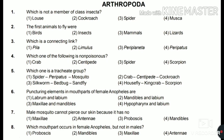Peripatus is a connecting link between phylum Annelida and phylum Arthropoda. Fourth: which one of the following is non-poisonous — crab, centipede, spider, or scorpion? The answer is crab, as centipedes, spiders, and scorpions are mostly poisonous. Fifth: which one is a tracheate group — spider, Peripatus, or mosquito; crab, centipede, or cockroach; silkworm, bed bug, or sandfly; housefly, king crab, or scorpion?